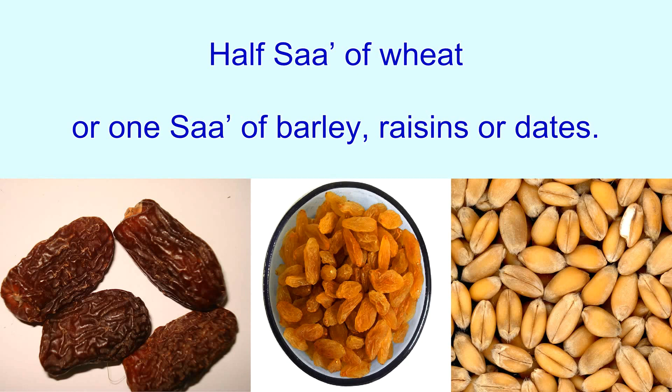Which one should you choose among these things — should you give on the basis of the price of wheat, or the value of barley, or raisins, or dates in Sadaqatul Fitr? The answer is: something that is affordable for you.